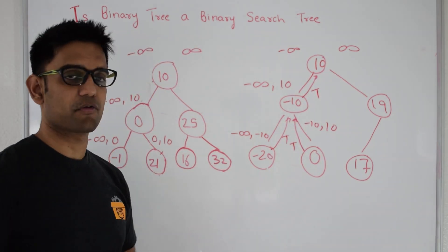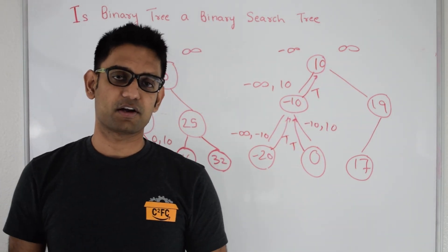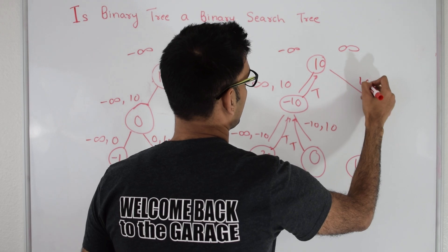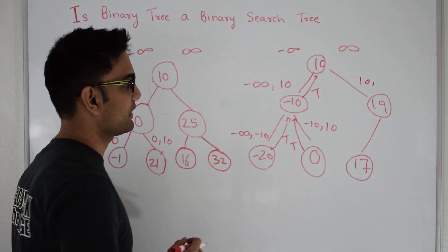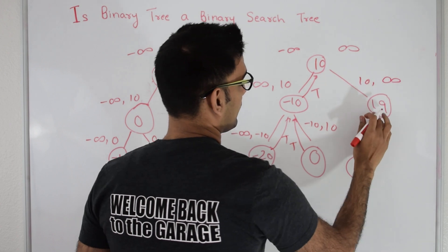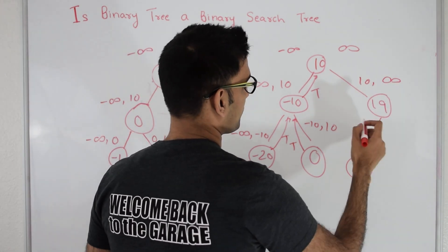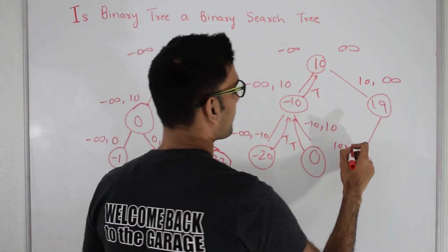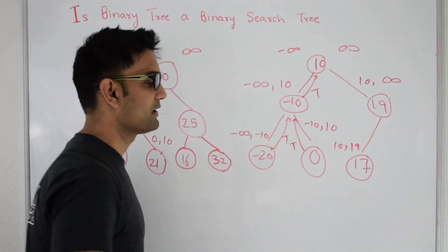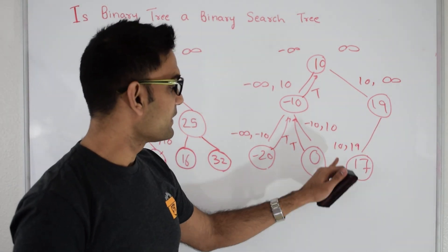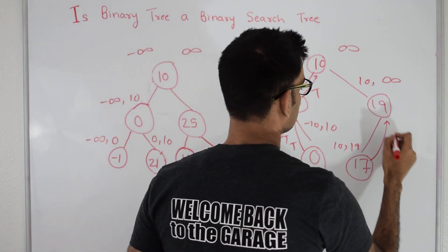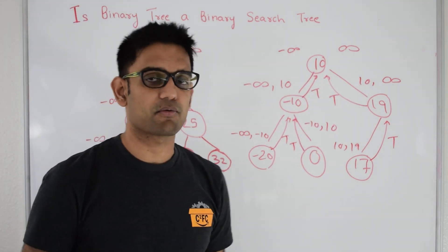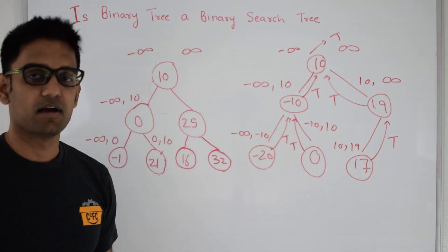So 10 got true from its left side and knows that the left subtree is a binary search tree. Now it checks if the right subtree is a BST. When it goes right, the lower bound is 10 because everything on the right side of 10 should be greater than 10, and the upper bound is infinity. 19 is between 10 and infinity, so 19 is fine. 19 goes to 17 and says your lower bound is 10 and upper bound is 19. 17 is between 10 and 19, so 17 returns true. So 10 gets true from both its left and right, and returns true saying it is a BST.